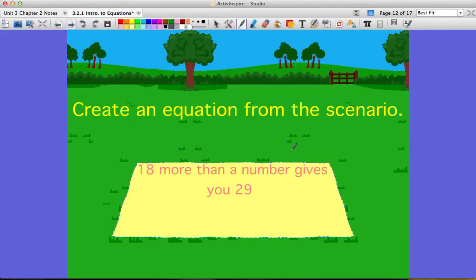So now we're going to create equations from the scenarios listed below. You need to look for the key words in your sentence. 18 more than a number gives you 29. So more than tells us that we're going to add. And we know we're going to add 18, because it's 18 more than a number. But remember, we look for order here. More than a number means we start with n. Then we have 18, and it gives you 29. So it equals 29.